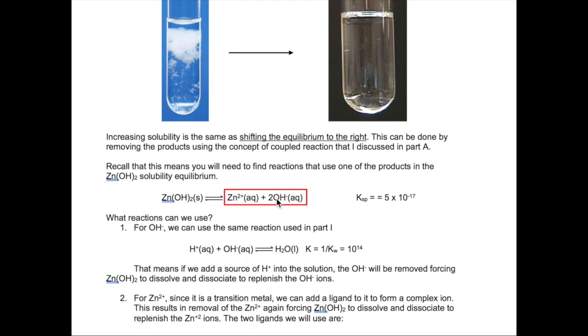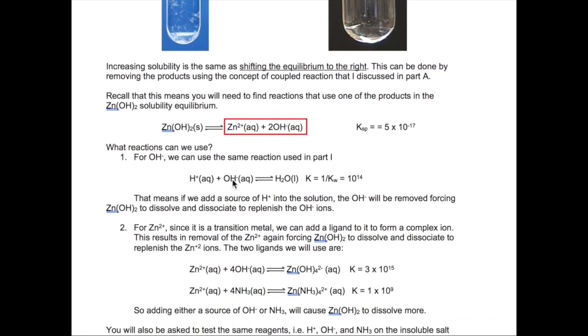So what reaction will work here? Well, for the hydroxide ion, it's not too difficult. We already had a reaction from Part A, which was the reaction between proton and hydroxide to form water. We can couple this reaction with zinc hydroxide dissociation, thus depleting the hydroxide and causing the zinc hydroxide to dissolve and dissociate some more to regain equilibrium. This will effectively dissolve all the solids.